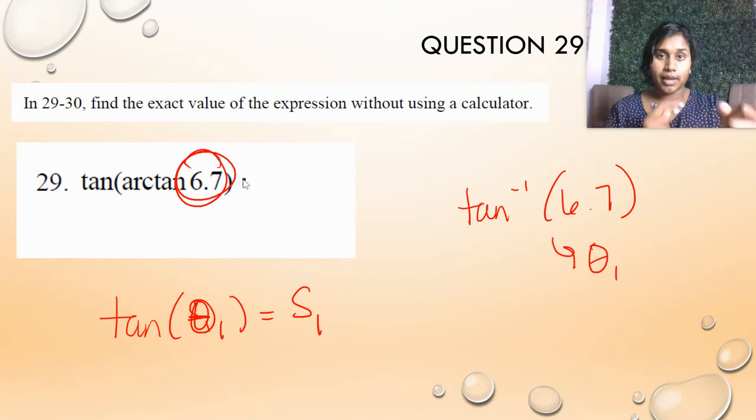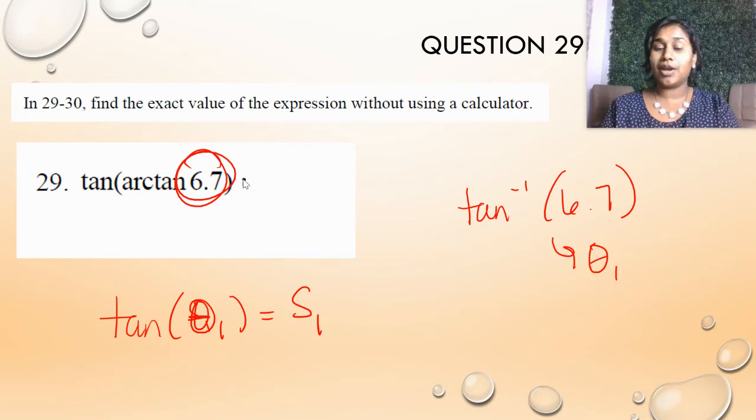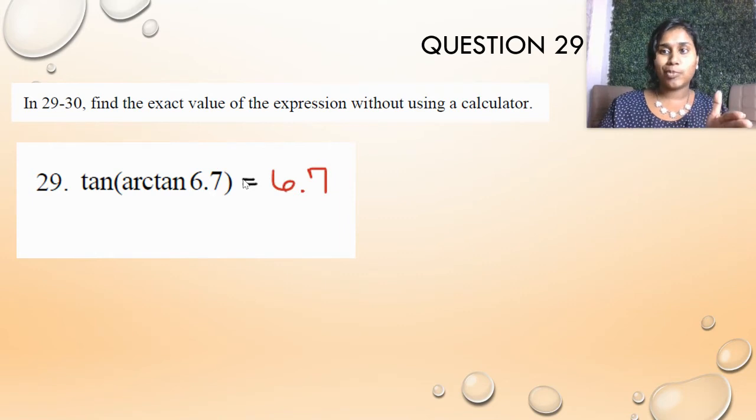Tan, arctan – they're going to cancel each other out. Sine, arcsine, cosine, arccosine, they cancel each other out. Tan and arcsine, however, will not. My answer here is just 6.7.